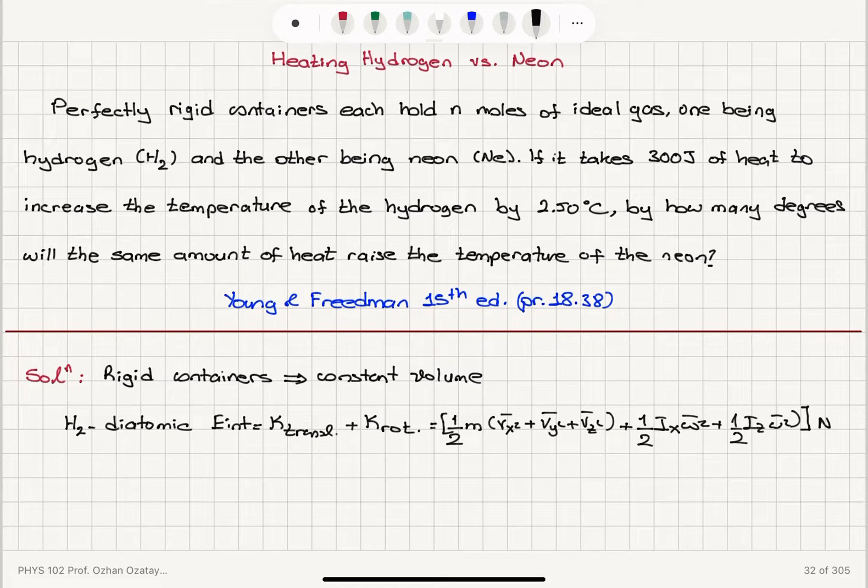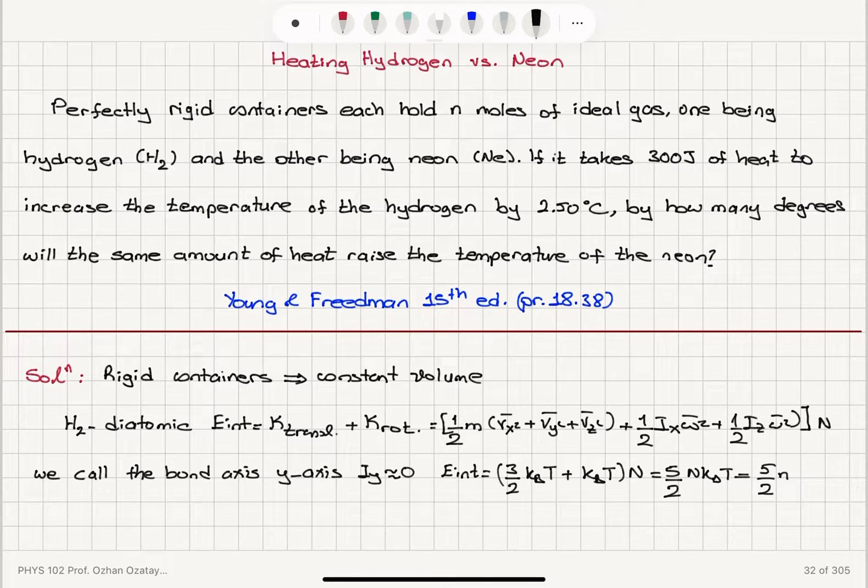So here I have considered the bond axis, or I have called the bond axis y-axis, so that the moment of inertia Iy is approximately equal to 0 because the molecules are right on the y-axis. So using equipartition theorem, I can see that the internal energy will have 3/2 kT contribution from translations and kT contribution from rotations, multiplied by N, or this can be written as 5/2 capital N, which is 5/2 number of moles universal gas constant times absolute temperature.